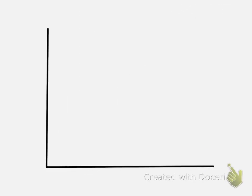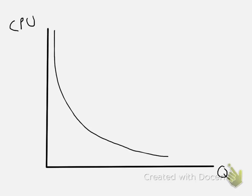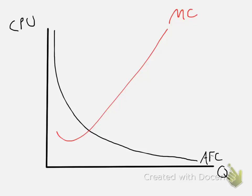Now let's put them all together on one set of axes, labeled Q and cost per unit. I'm going to draw the average fixed cost first — it looks something like that. Now, switching colors for the other curves, I'll draw marginal cost somewhere here. It doesn't matter where marginal cost intersects average fixed cost — there are no rules for that. Next, I'll draw the average variable cost curve. Average variable cost intersects marginal cost at the minimum of the average variable cost, so here's the minimum, with the curve coming up on both sides.